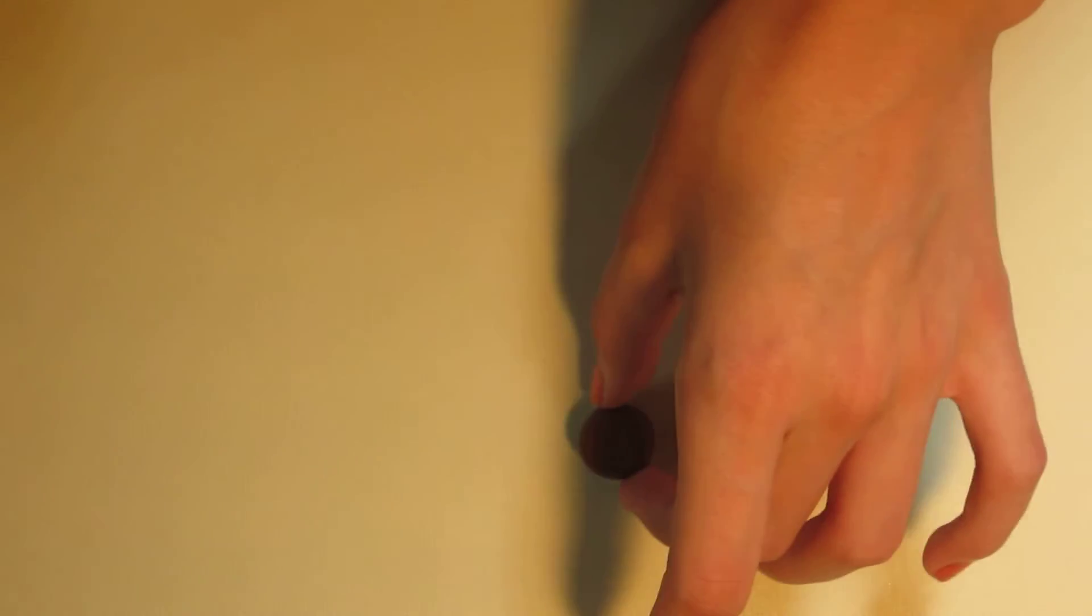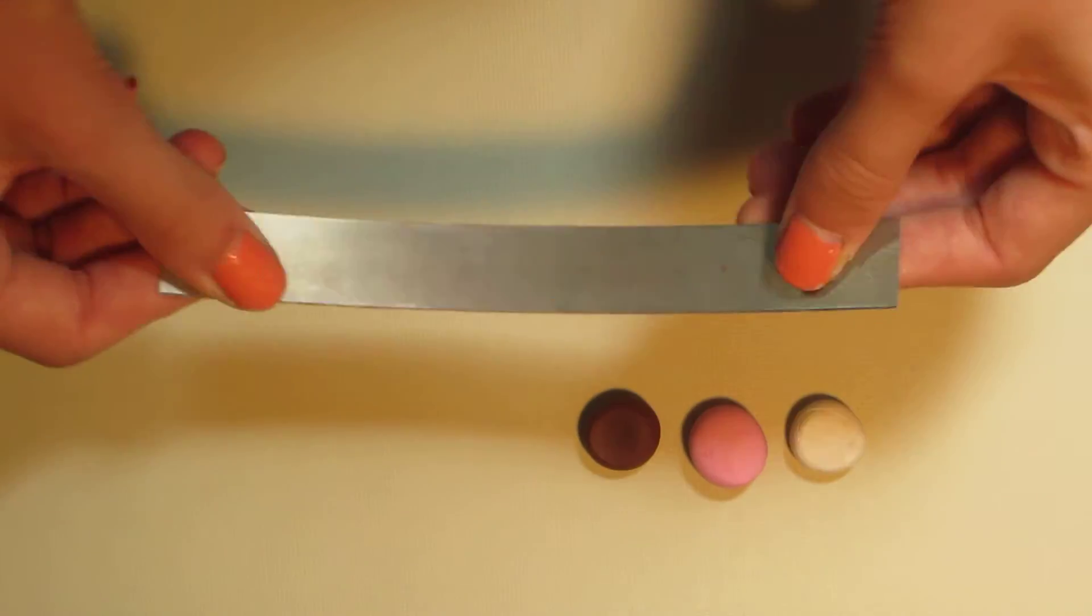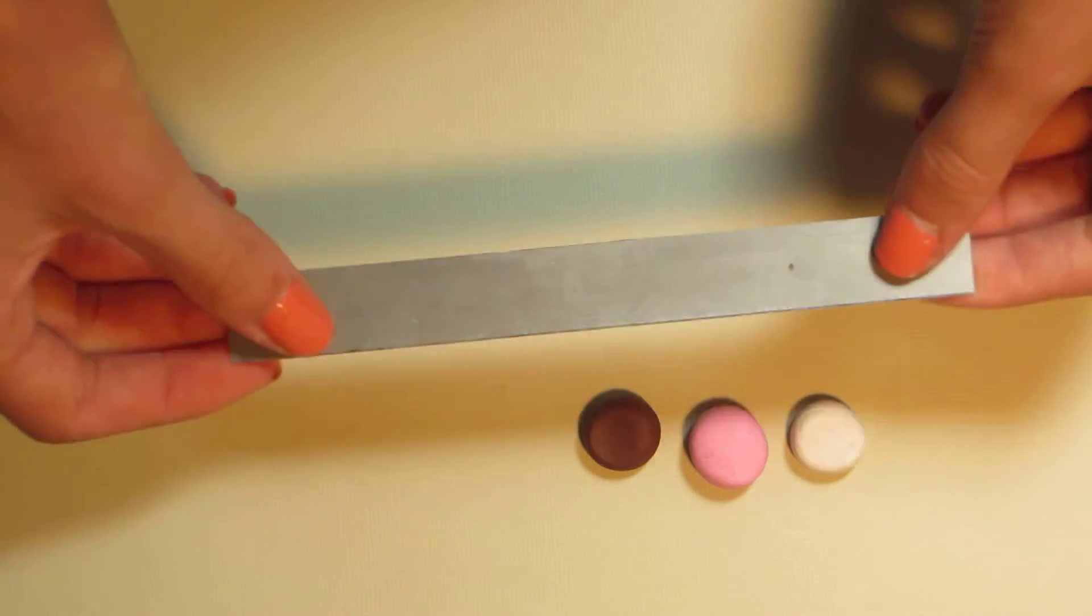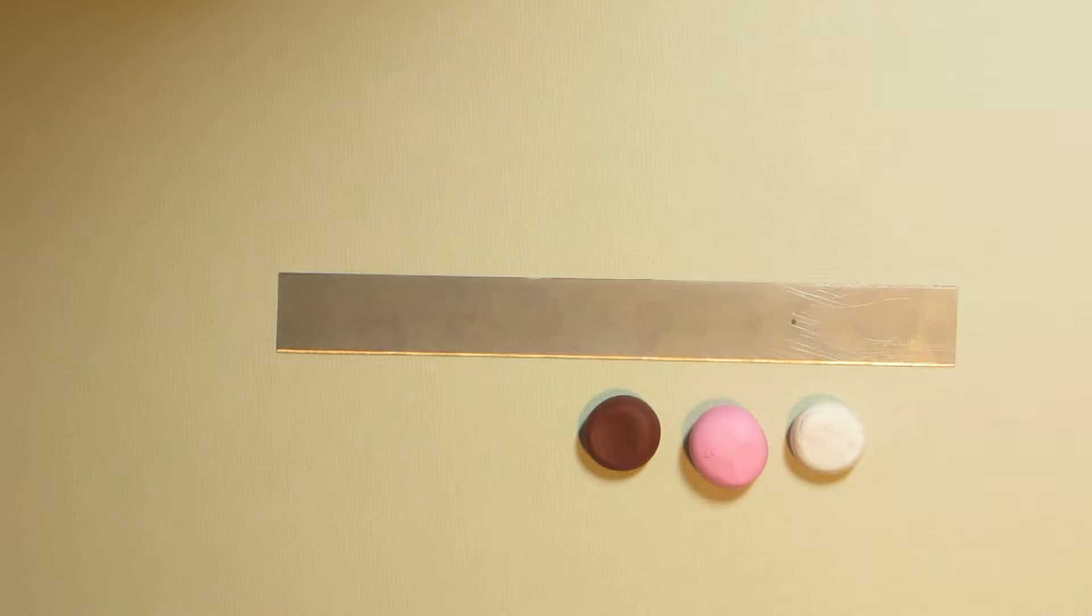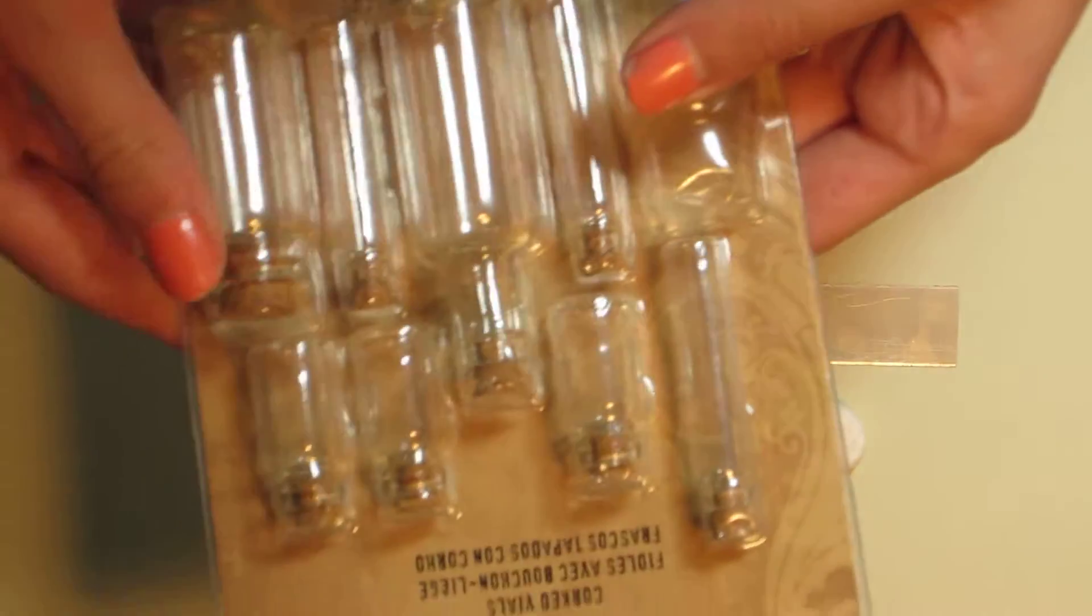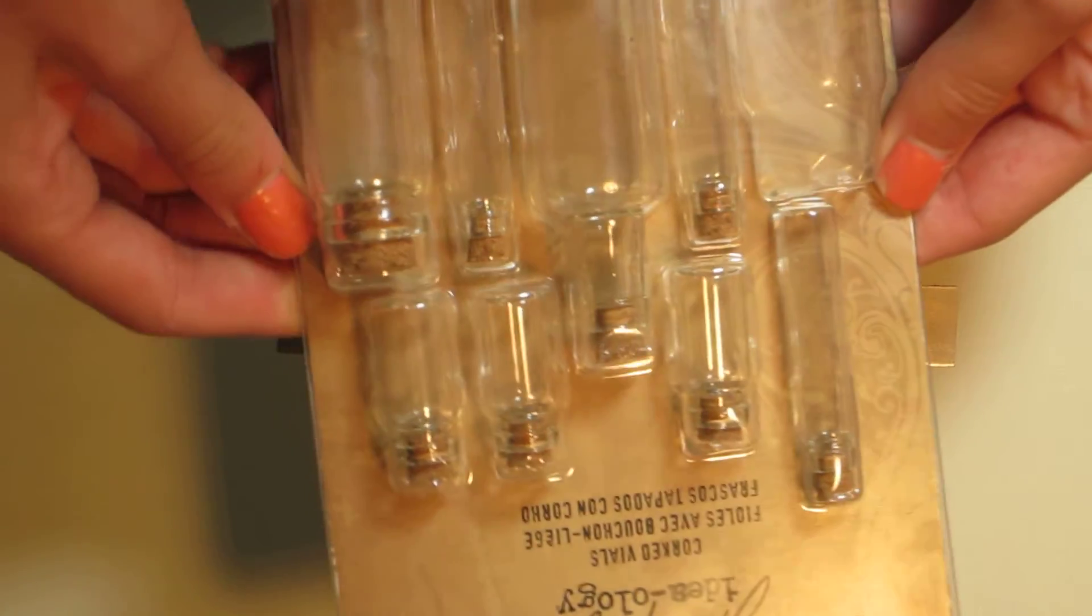And what you will be needing for this tutorial is a white ball of clay, a pink ball of clay, and a dark brown ball of clay. You will also be needing a blade. I'm just using a really thin blade that bends. You will also be needing some bottles. I got these at Michaels in the scrapbooking section.